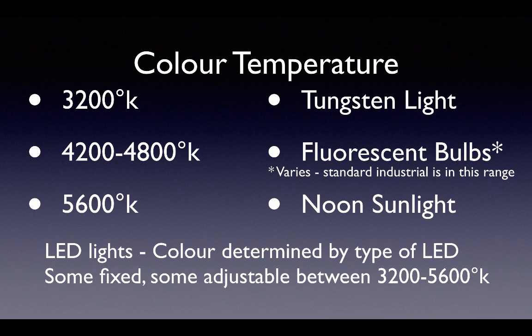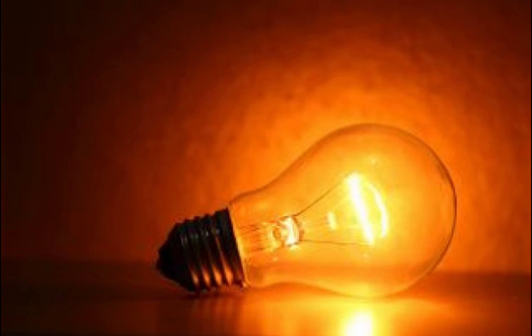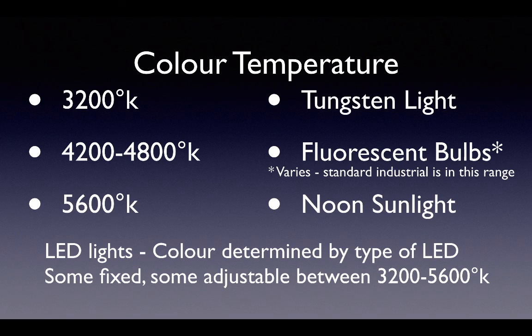There are some important color temperatures to know. Tungsten, or incandescent lights, are traditional light bulbs that get very hot. The light is 3200 degrees Kelvin. We describe this as a warm light. Traditional TV studio lights are tungsten lights.